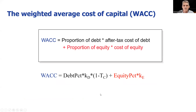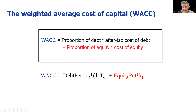Once we've got our cost of equity — that's the hard part — we need to put it all together. Here's the WACC formula: we need the proportion of debt times the after-tax cost of debt, plus the proportion of equity — and these must add up to 100%. So: what is the percentage of debt in the company times the cost of debt after tax, add that to one minus the percentage of debt — because capital is either debt or equity — times what shareholders want.